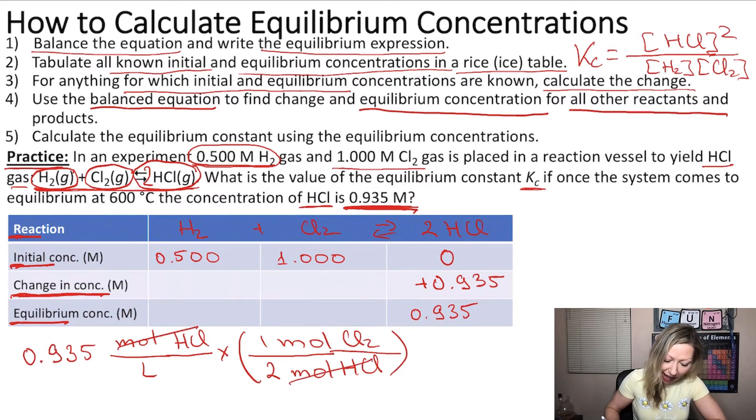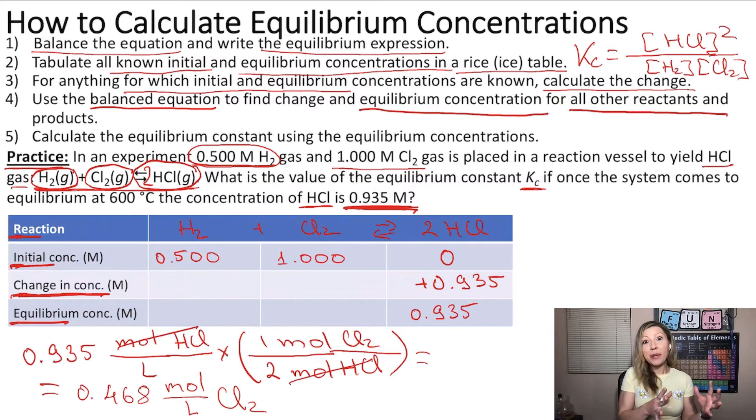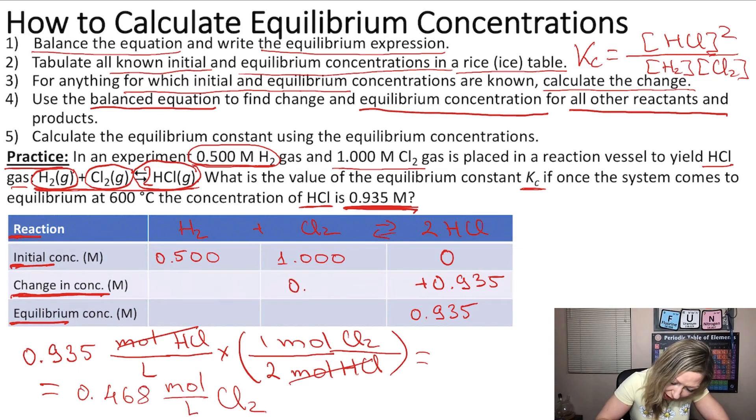And at the end, I'm going to get 0.468 mol per liter of Cl2. Simply because in the equation, from 1 mol of Cl2, I made 2 mols of HCl. So the change in case of Cl2 is going to be 0.468 mol per liter.